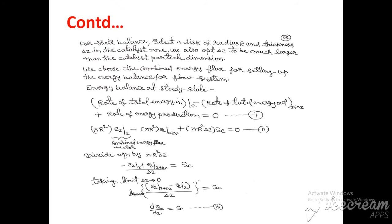Ez at z, where Ez is the combined energy flux vector. If we multiply this flux vector by area, it will give the energy flow rate or heat flow rate. If we multiply this by pi R square, which is the area of the reaction zone's circular area.